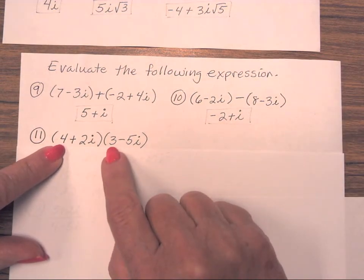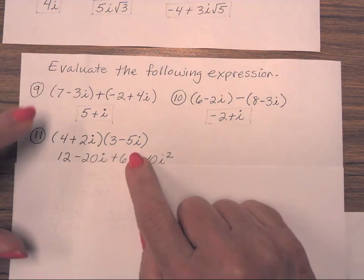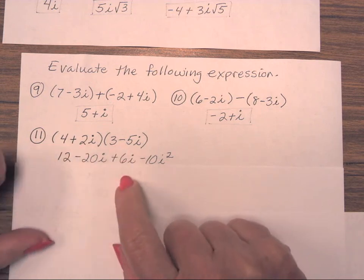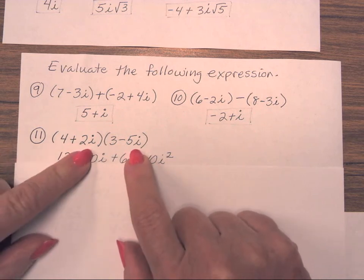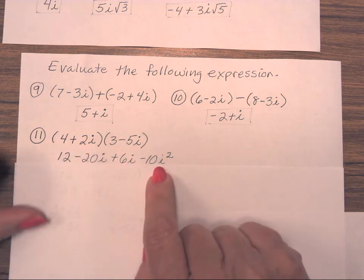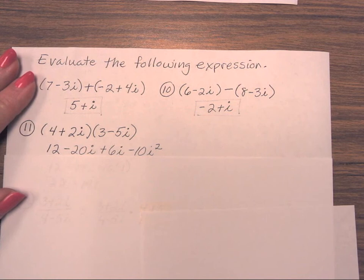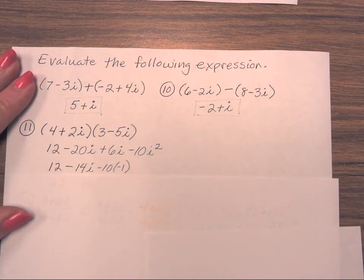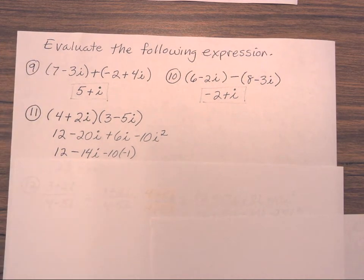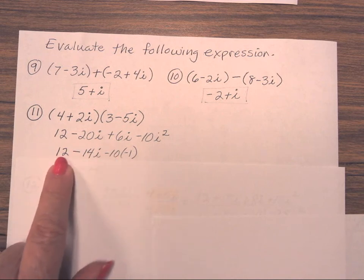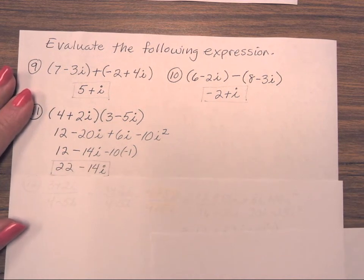FOILing: 4 times 3 is 12. Outer term: 4 times negative 5i is negative 20i. Inner term: 2i times 3 is 6i. Last: positive 2i times negative 5i is negative 10i squared. You are not finished yet — the two terms in the middle are alike: negative 20i and positive 6i is negative 14i. But you must remember, you cannot leave an exponent on i. i squared equals negative 1, so negative 1 times negative 10 is positive 10. This term is now real and needs to be combined with the real parts for a final answer of 22 minus 14i.